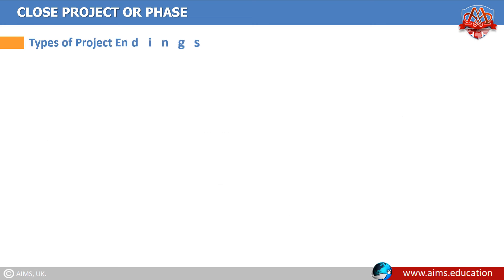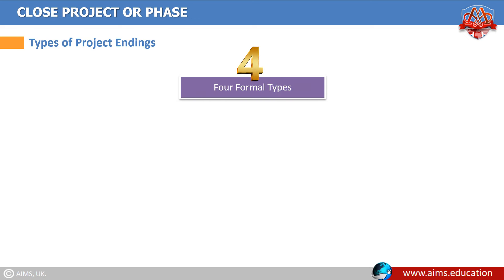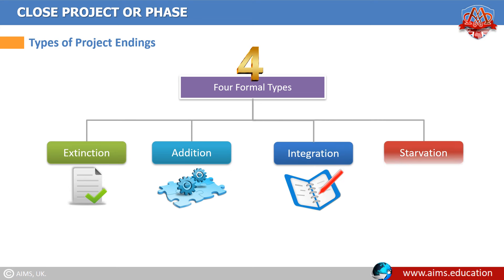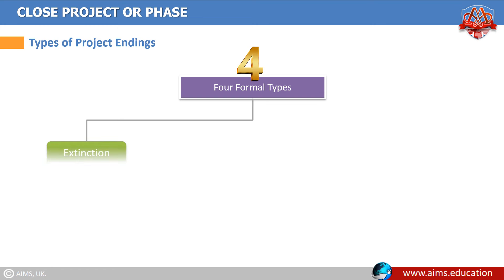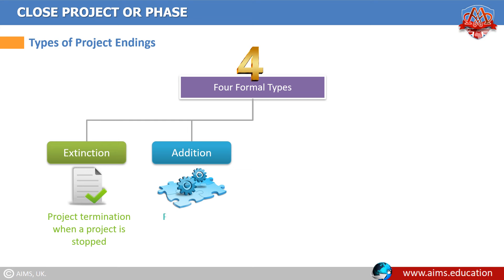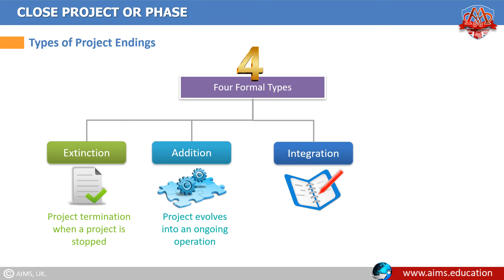Types of project endings: there are four formal types of project endings — extinction, addition, integration, and starvation. Project termination by extinction is when a project is stopped due to either its successful or unsuccessful conclusion. Addition is a type of project ending where the project evolves into an ongoing operation. Integration is a type of project ending where financial or human resources assigned to the project are diverted or reassigned elsewhere in the organization.